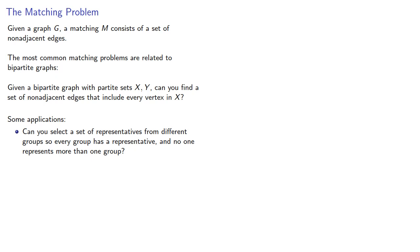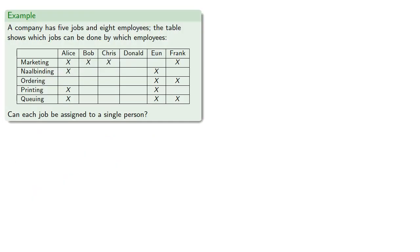This is the problem of finding a system of distinct representatives. Another possibility: can you match jobs to people so that every job is done by a different person? Or can you match women to men they would want to marry?